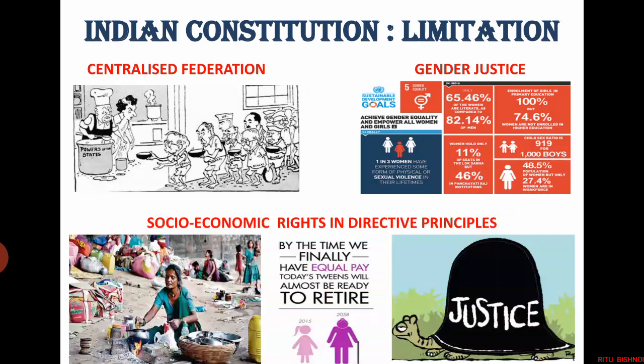We cannot say that the Indian constitution is perfect and flawless — there is always scope for improvement. Let us discuss certain limitations of the constitution. First, centralized federation. At the time the constitution was framed, it was necessary for the centre to have overriding powers concerning the states. Princely states had to be merged with the union, and reorganization of state boundaries and renaming of many states had become essential to accommodate regional identities and aspirations. However, now there is a serious need to review the provisions related to centre-state relations. Making the states more responsible for matters falling within their domain shall help them contribute effectively and also reduce the burden of the centre.